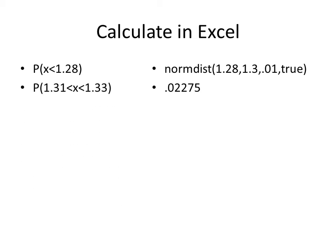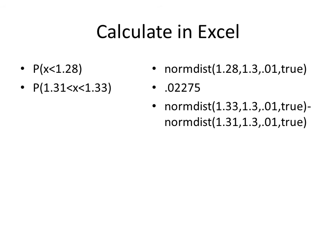What if I posed a slightly harder one? What if we wanted X to be between the values of 1.31 and 1.33, and we wanted the probability of that? You do this exactly how we did it in the binomial and the Poisson. Calculate the probability that X is less than 1.33, subtract off the probability that it's less than 1.31. This is how you would write that in Excel. Notice here's your upper limit here, your lower limit here, and we're subtracting the two values.